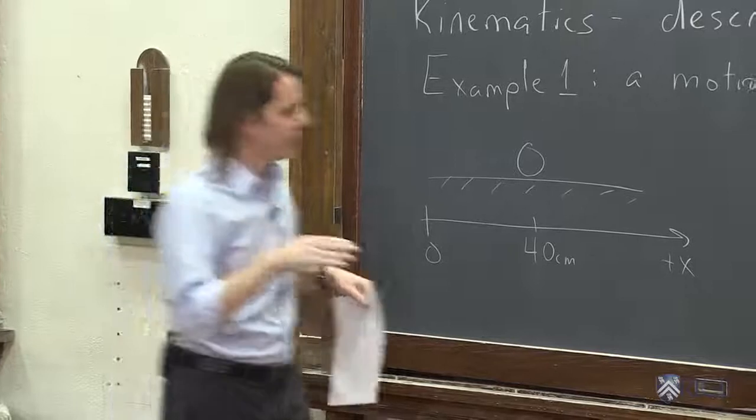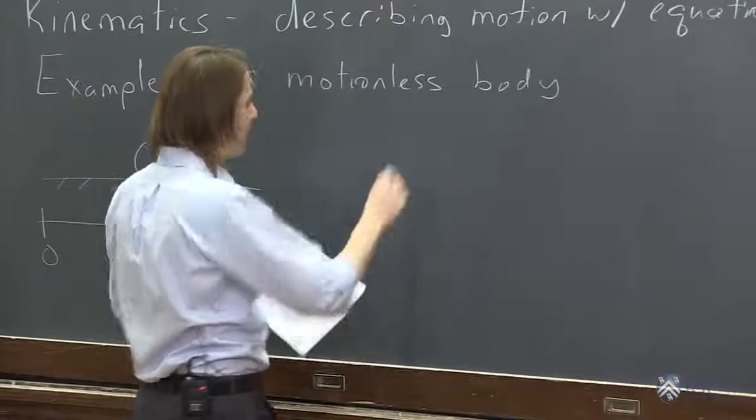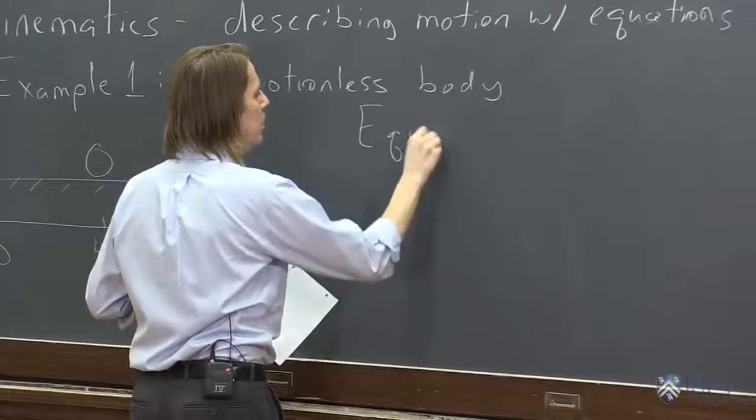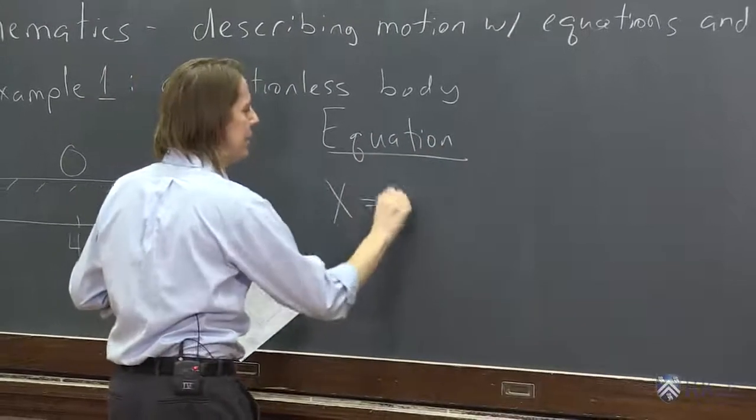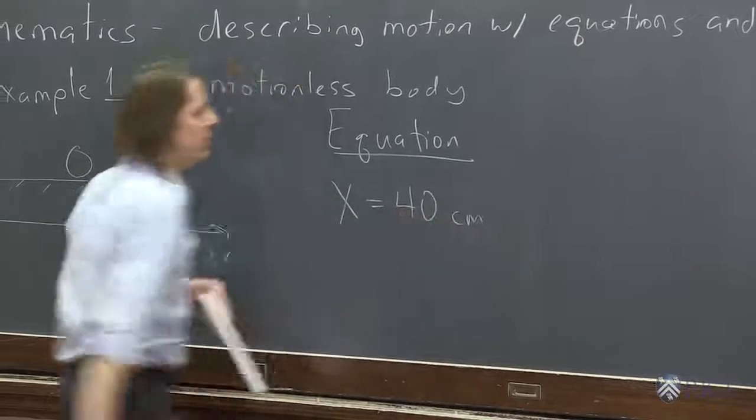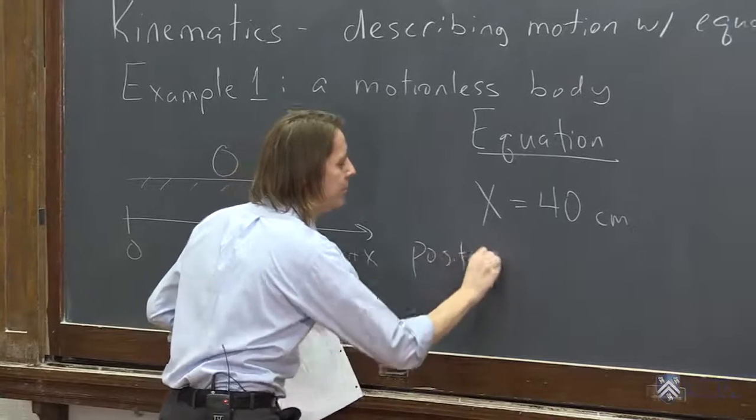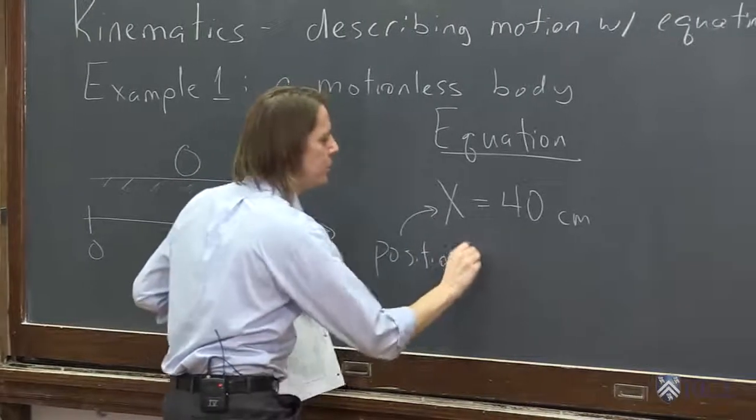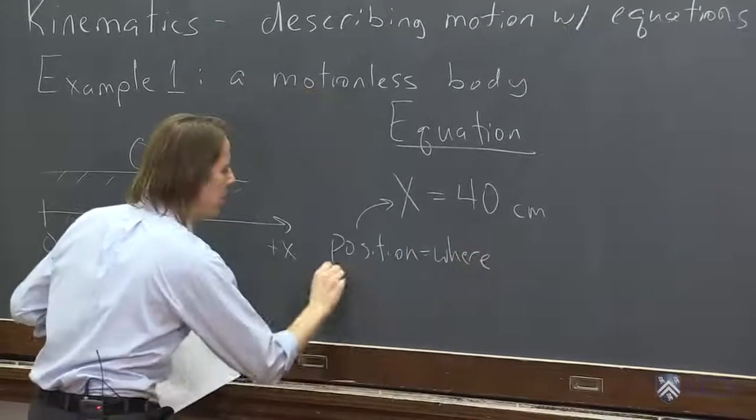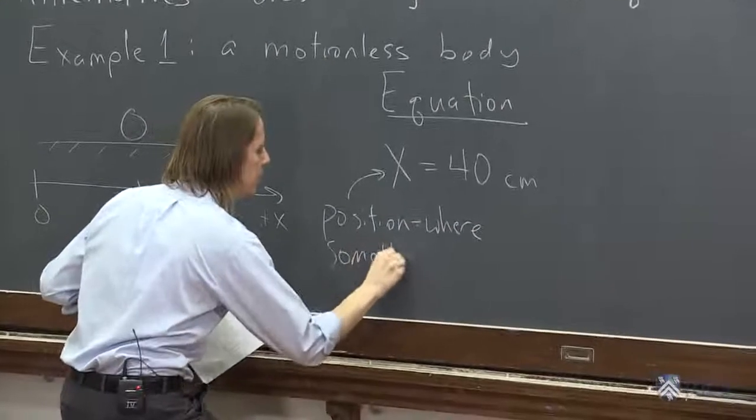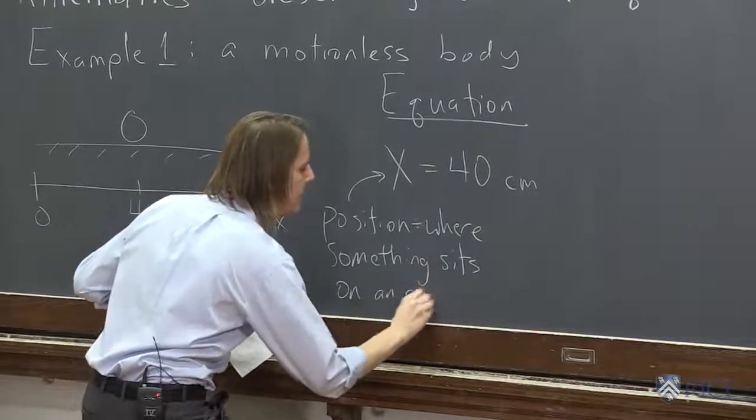Let's look at the equation that would describe this very simple example of something sitting perfectly still. The equation would simply be x equals 40, and the unit is centimeters. So x we'll call the position, which equals where something sits on an axis.